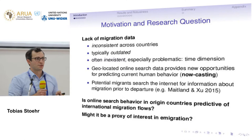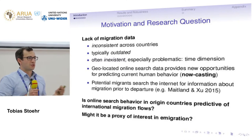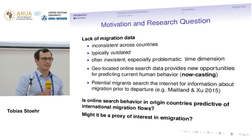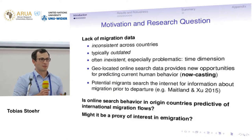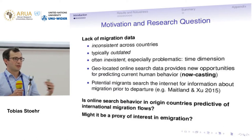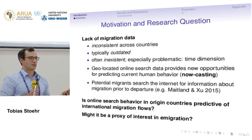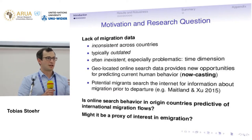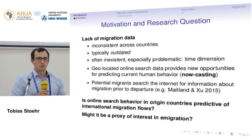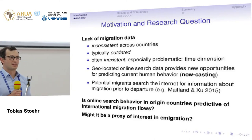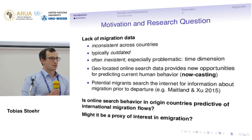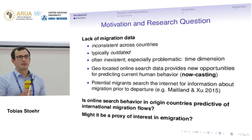The main motivation for the paper is that, as you all know, migration data is highly problematic. If you want to look at international migration between several countries at the same time, there are a few sources with which you can reliably do that. The World Bank has nice data. There's the OECD migration panel data, for example, that we use here.